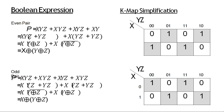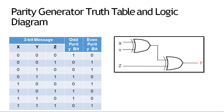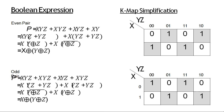इसकी अगर K-map बनाऊं तो even parity में x, y, z का even pair लेते हैं। Truth table से जहां-जहां one है उसको K-map में one किया है, तो यह equation आती है: x XOR y, x XOR z — यानि तीनों का XOR अगर लेती हूं तो even parity बनती है।